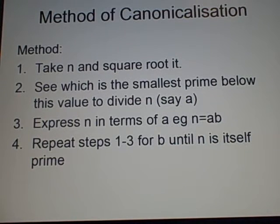So in that case with 10, the smallest is 2. And then you express your value in terms of your other one. So we have 10 equals 5 times 2. And you repeat the steps for the b, so our b was 5 here, until n is itself a prime.